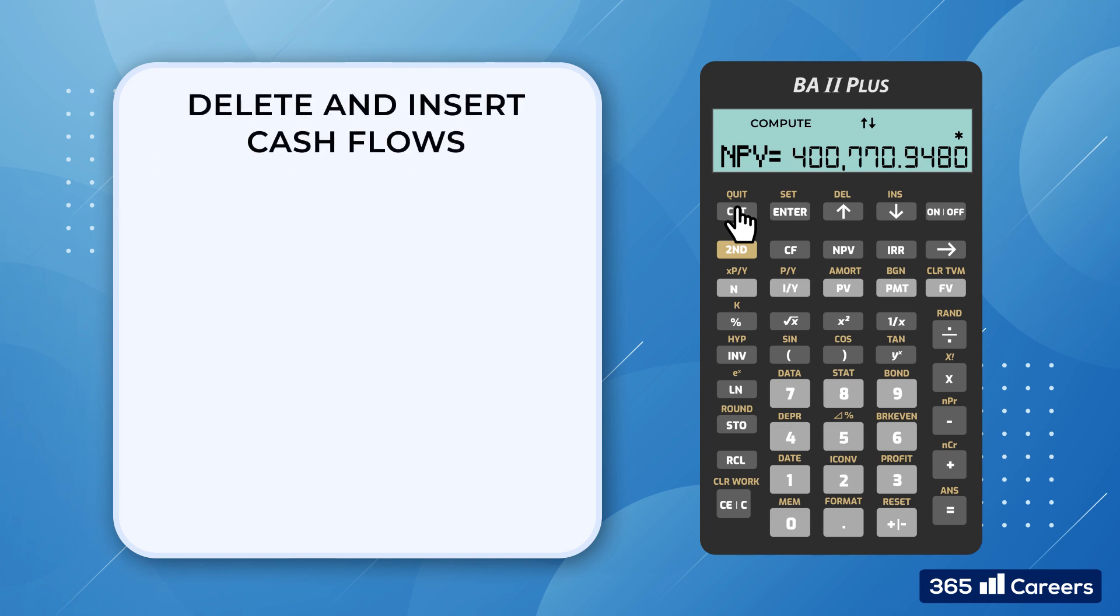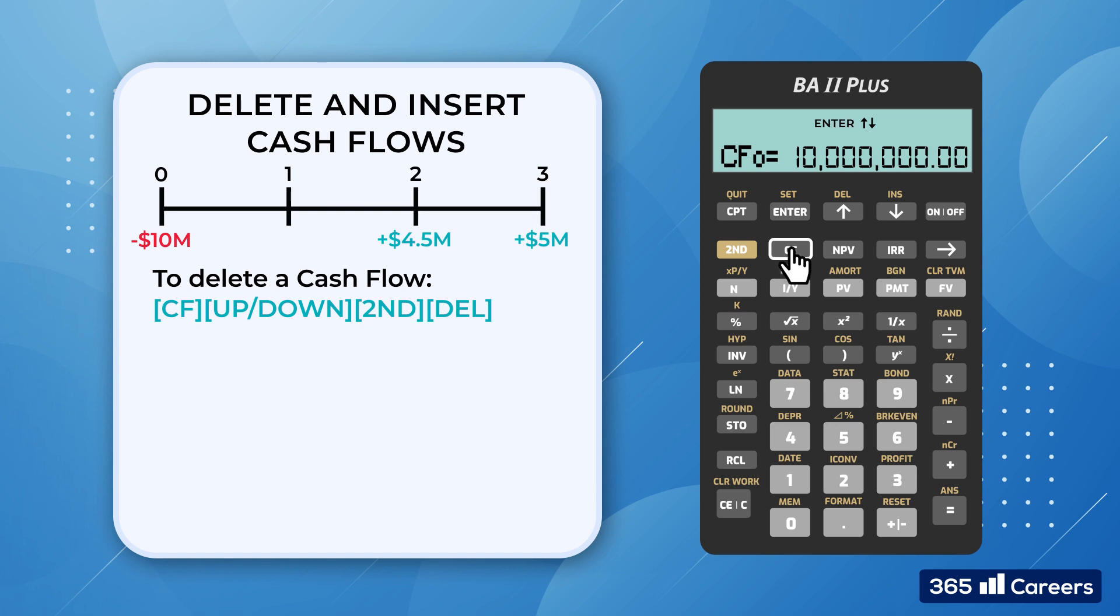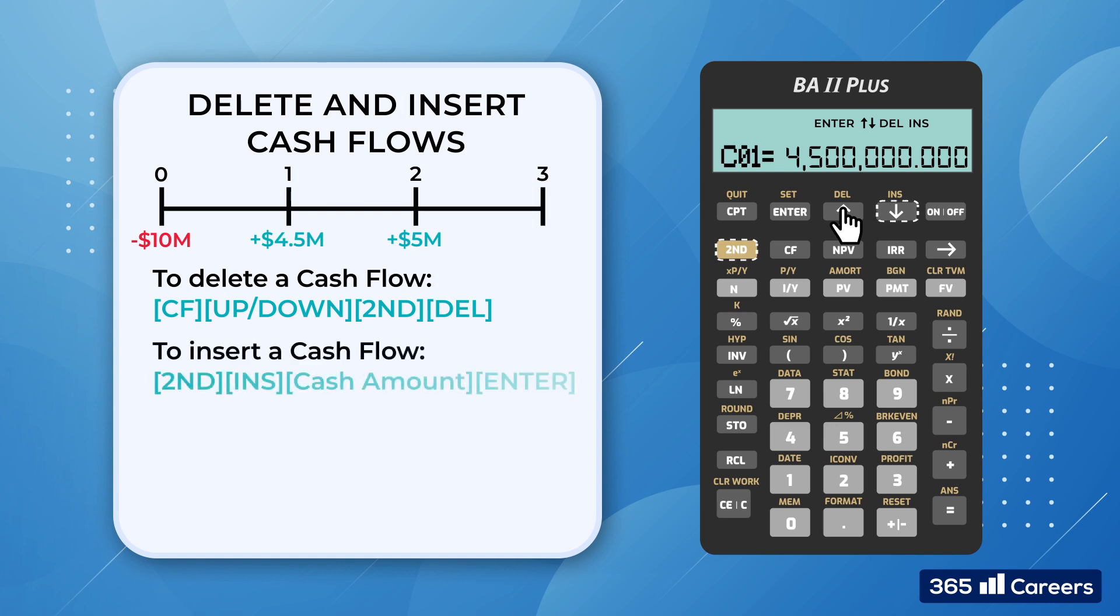Deleting and inserting cash flows isn't difficult either. Let's say that we would like to remove CO1 from the calculation. We press CF, then we scroll down to the cash flow and press 2ND DEL. The calculator erases the value and decreases the number of subsequent cash flows automatically. So the first cash flow becomes $4.5 million, and so on. And, in case we change our mind and decide that we still want to have a first cash flow of $3 million, we could press 2ND INS and then enter the value, $3 million.